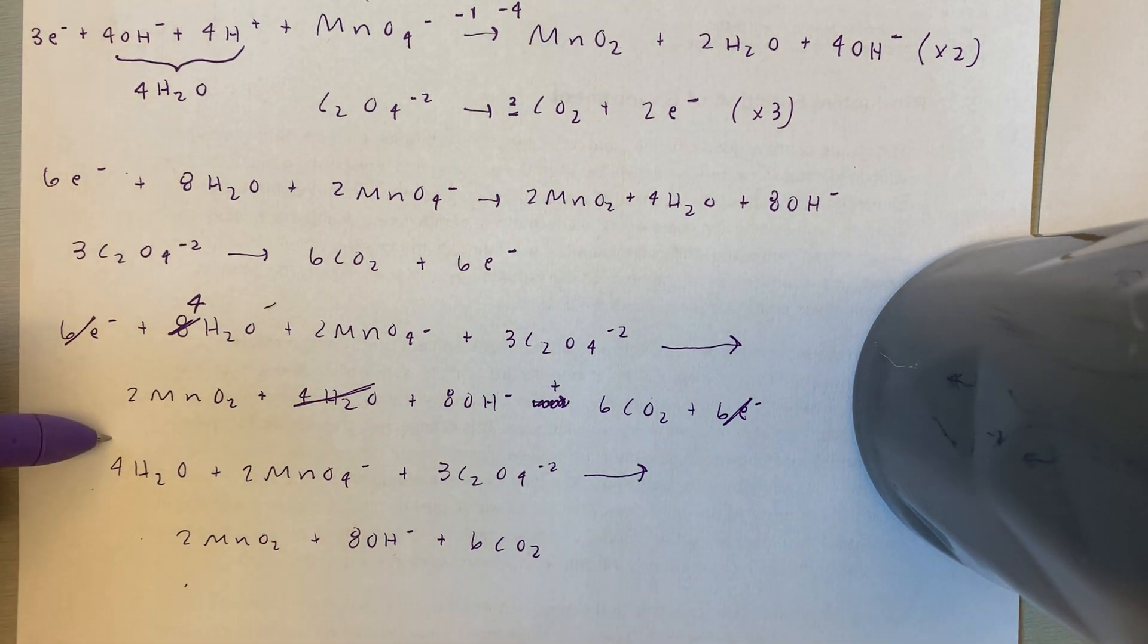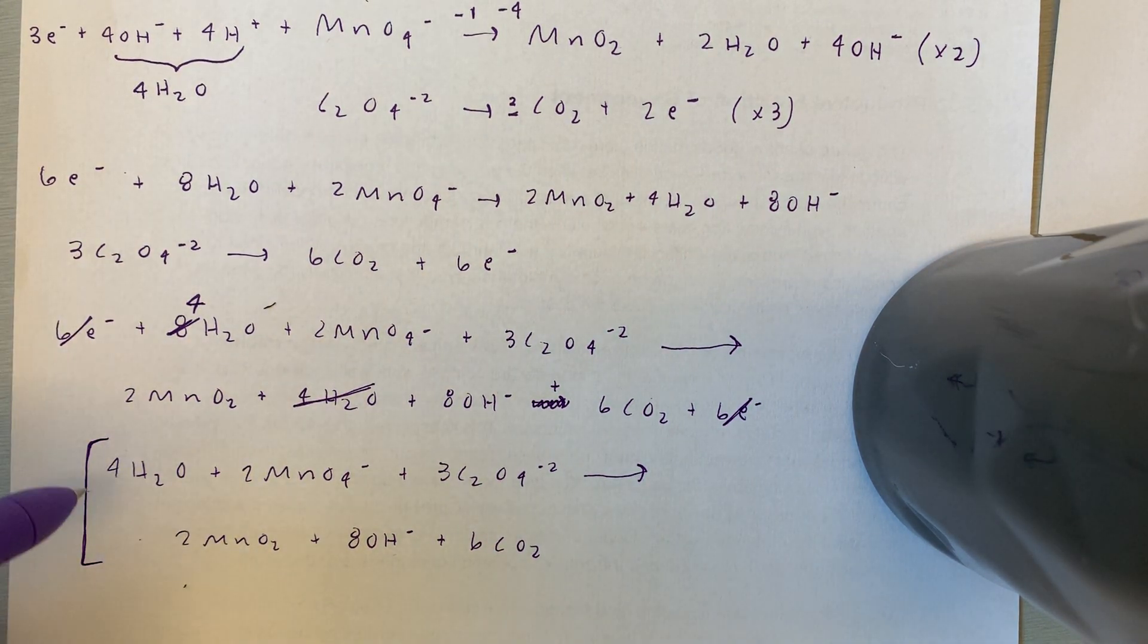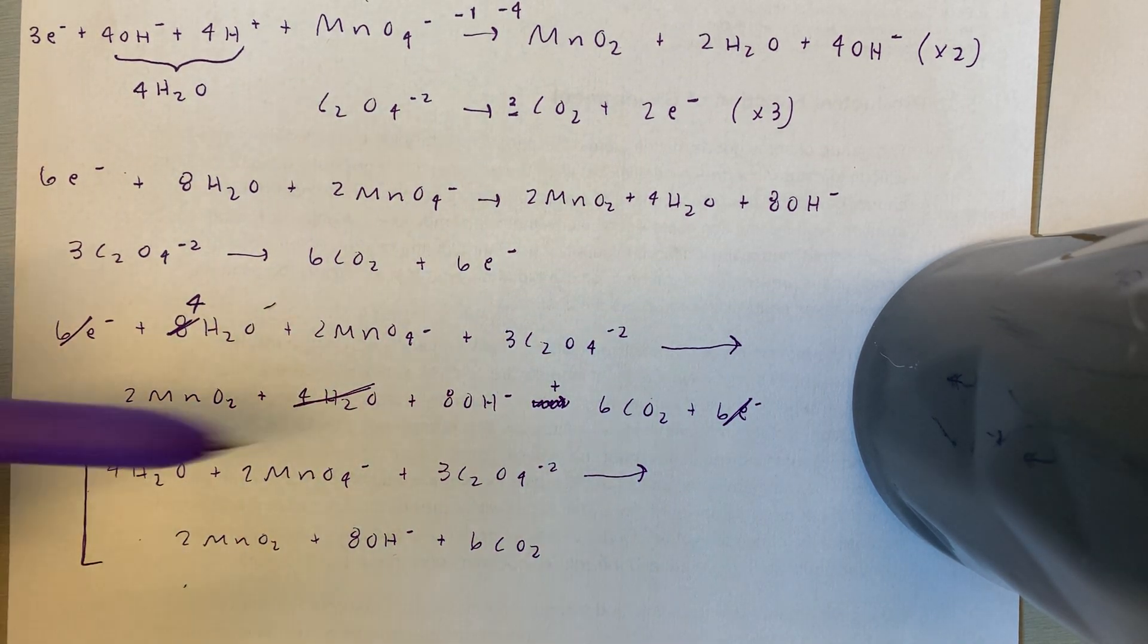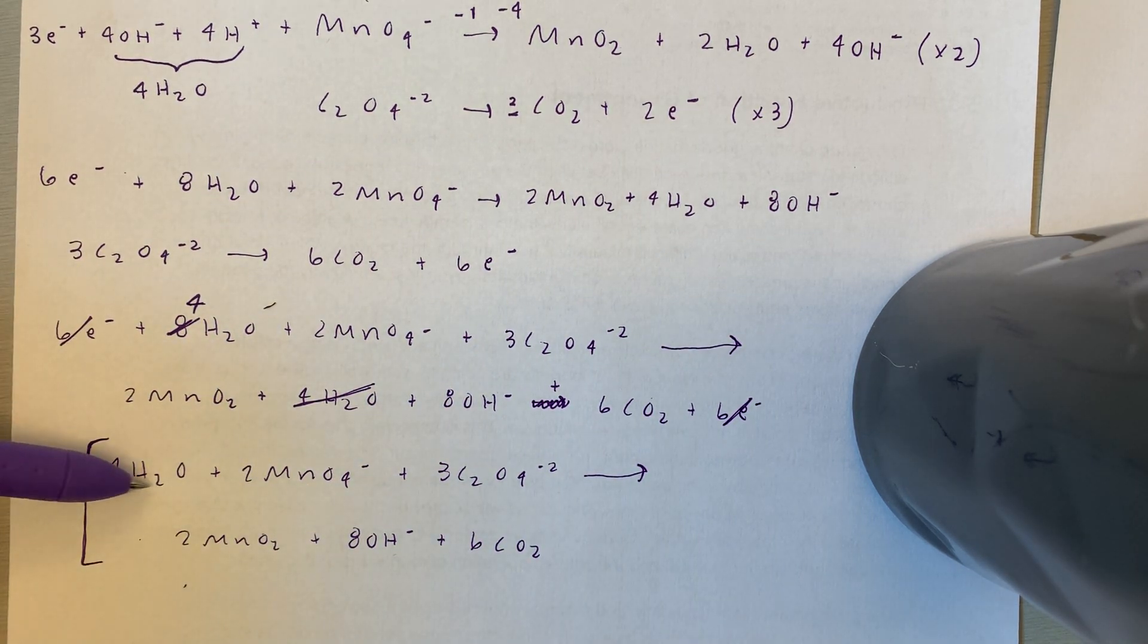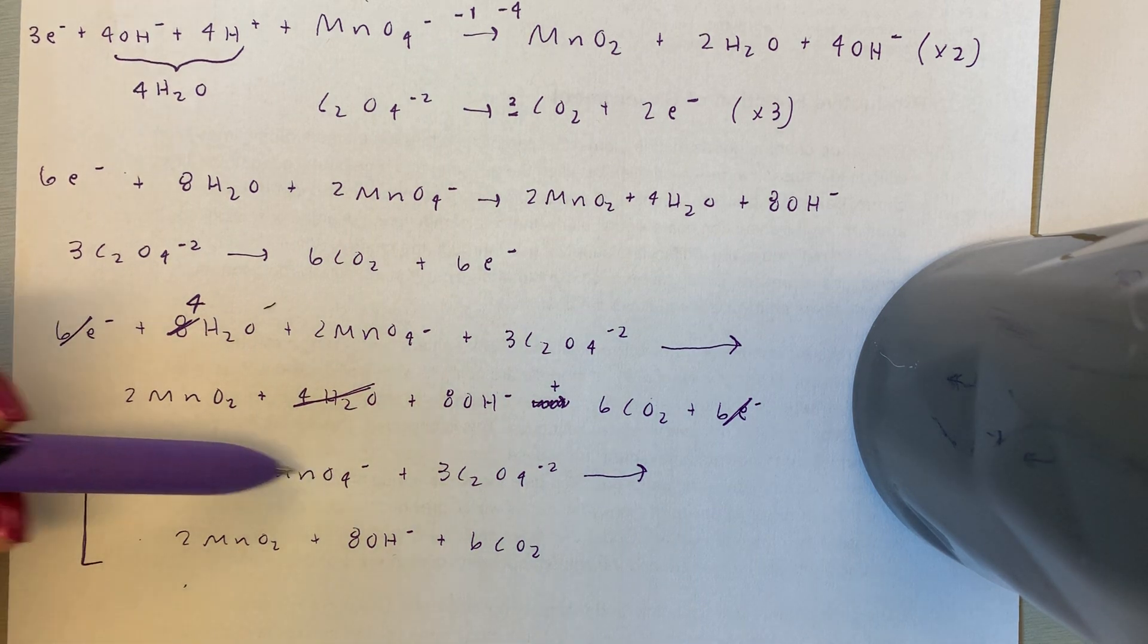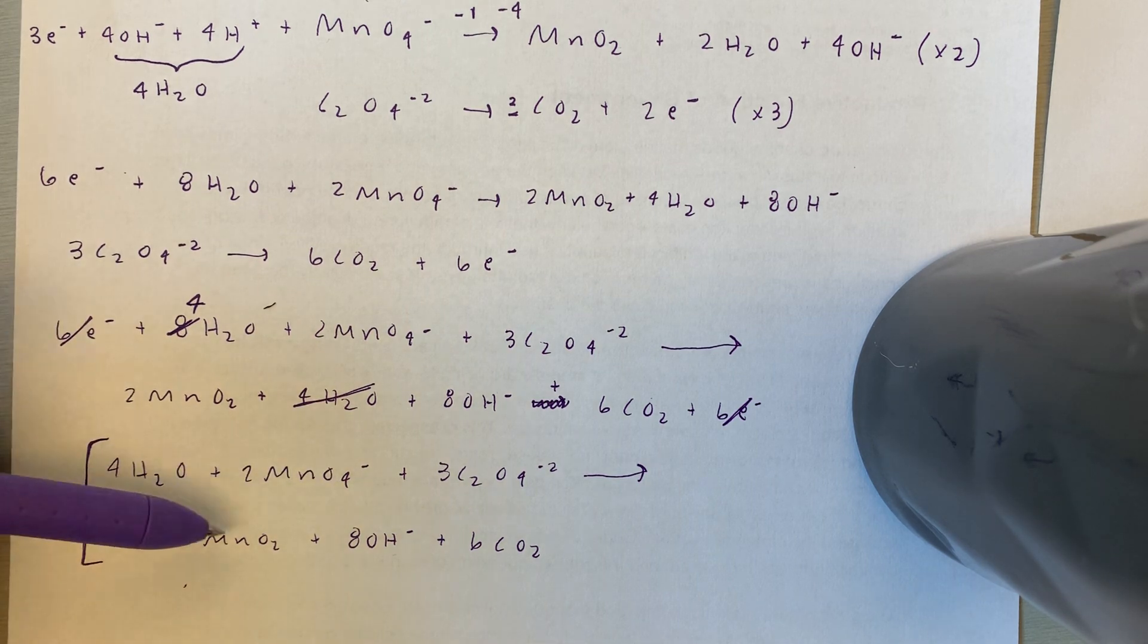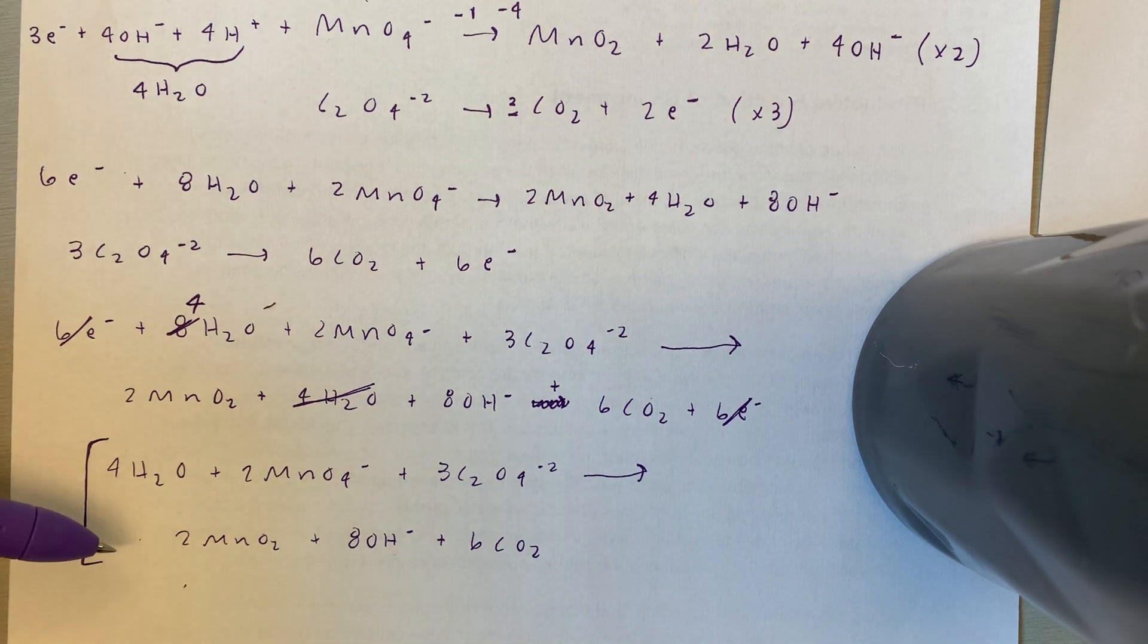So this is our reaction, we did it, but before we can turn it in, we have to make sure and check our work. So let's check everything's balanced first, that's the easy part. 2 MN, 2 MN, we're good. We have 6C, 6C, we have 8 hydrogens on this side, and 8 on this side, 4 oxygens plus 8 plus 12, so 4 plus 8 plus 12, 24. Yay, we're all good. Everything's balanced.